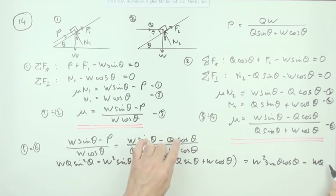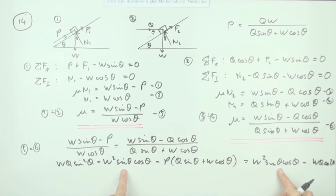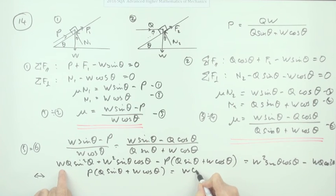And then here I've got minus WQ cos² θ. Now these two go when I start switching about. I'm going to take this over here and that over there, but write it the other way around. So switching it back to front, I've got P times Q sin θ plus W cos θ is equal to, and all you're left with is WQ sin² θ.